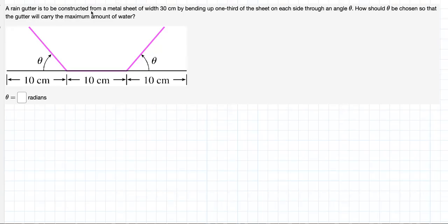A rain gutter is to be constructed from a metal sheet of width 30 centimeters by bending up one-third of the sheet on each side through an angle theta. How should theta be chosen so that the gutter will carry the maximum amount of water?